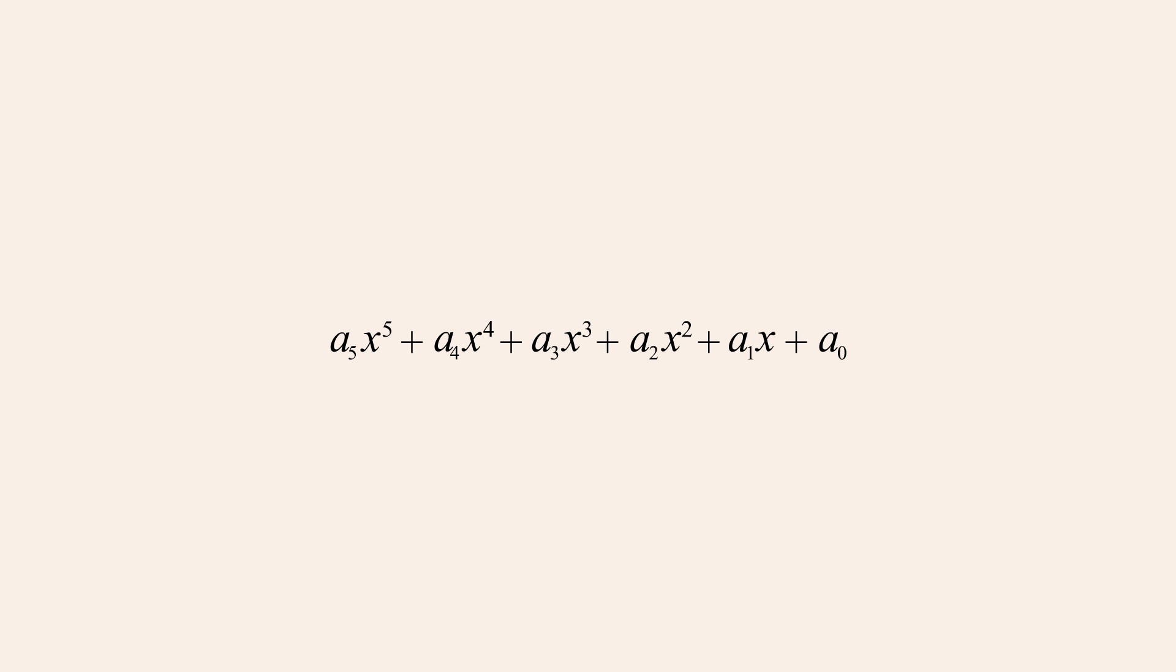So for a polynomial of degree n, the subscript and exponent of the first term would be n, with each subsequent term having a subscript and exponent one less than its predecessor.